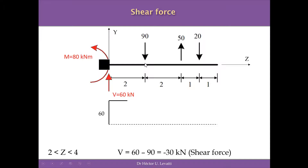The next interval is from 2 to 4 meters. Positioned in the middle of this interval, the shear force is 60 kN from the reaction minus 90 kN because it's coming down, resulting in minus 30 kN. So in the interval from 2 to 4, the shear force is minus 30 kN. We sketch this below the reference line because it's negative, and it remains constant throughout this interval.